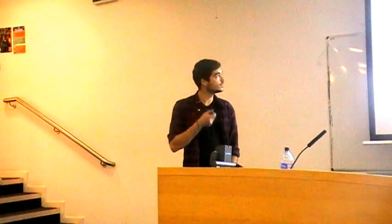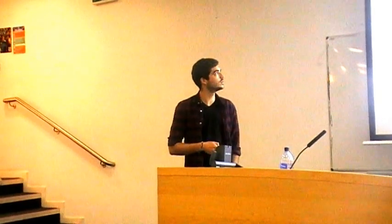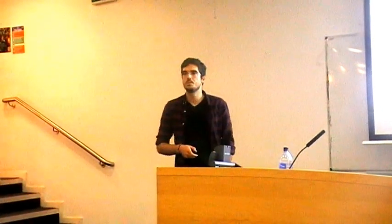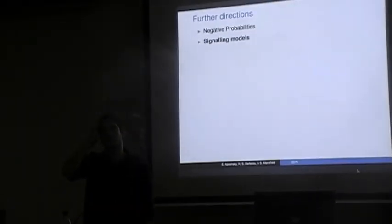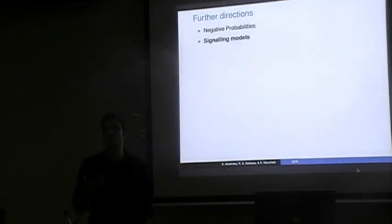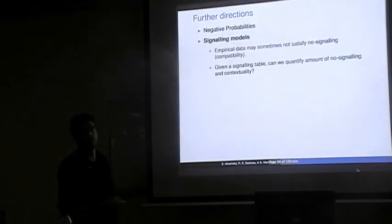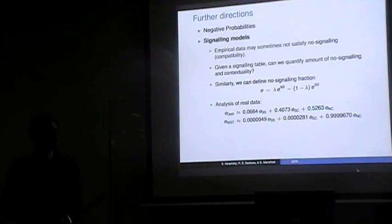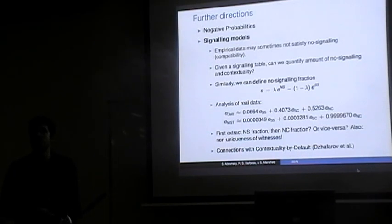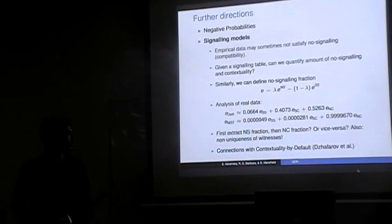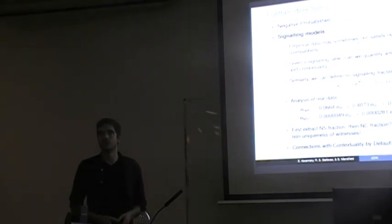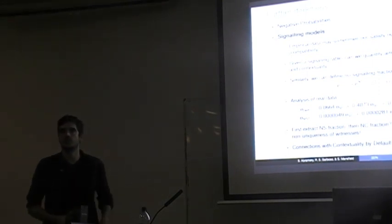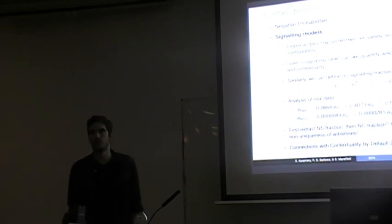[Q&A] Question about signaling fraction: what is it you're trying to do — express a low-signaling distribution as a combination of a no-signaling one and a signaling one? The idea is: if you start from a signaling distribution, can you analyze it? Empirical data will sometimes have signaling, and we want to ask whether we can still say anything meaningful about the existence of actual contextuality. This is still very early work.